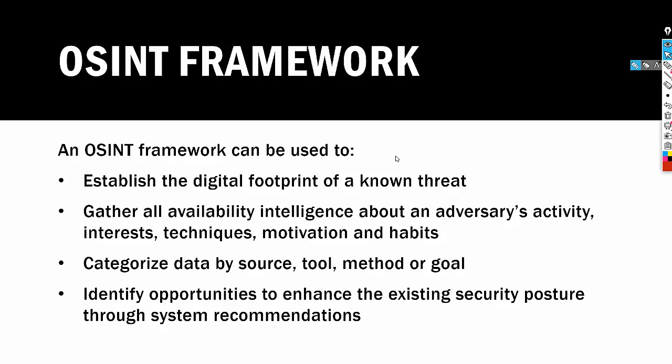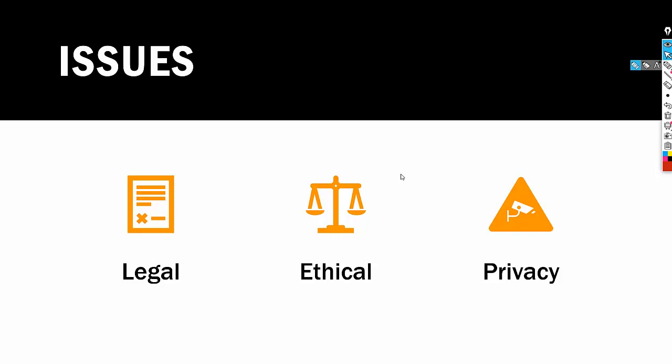OSINT comes with many advantages but also significant issues. The biggest is legal: publicly available information is perfectly legal to access, analyze, and distribute, but it can be used by attackers to support illegal activity by seeding misleading or malicious data into communities. Hacktivists are known to distribute data publicly to influence public opinion — the Cambridge Analytica case is a best example. The second issue is ethical: people and companies must use such information ethically and ensure they are doing so for legitimate purposes so information is not used to exploit. Third is privacy: collecting too much information from multiple sources can breach someone's privacy.